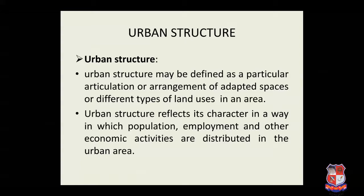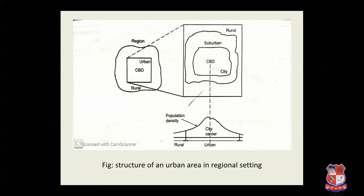The urban structure reflects its character in the way in which population, employment and other economic activities are distributed in an urban area. You can see the figure of the structure of an urban area in a regional setting. In this figure, the density of population is maximum near the center, the central business district or CBD. The density reduces as the distance from CBD increases, and in rural areas the density is minimum.